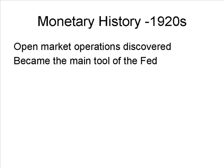In the 1920s, the Fed initially did more discount lending. Then open market operations were discovered. Supposedly in the early 1920s, the amount of discount lending was so minimal due to a weak economy that the Fed, which made all its money from discount lending, started to park its money in other securities. It then noticed that this had an effect on private bank reserves and on short-term interest rates. By the late 1920s, open market operations were the main tool of the Fed — and the tool we use today.